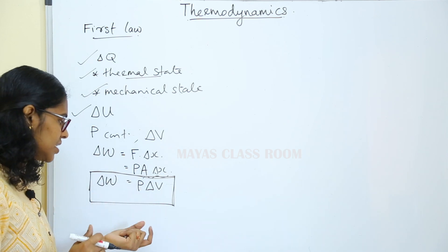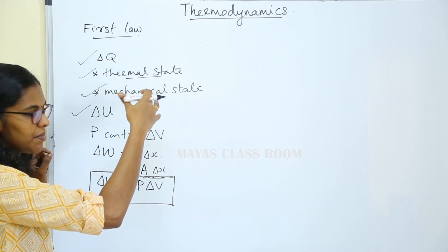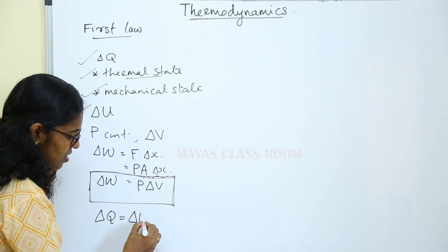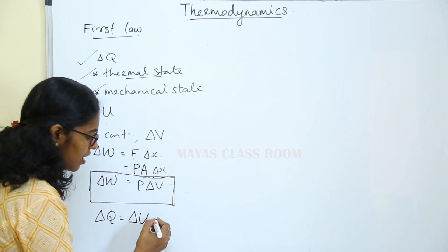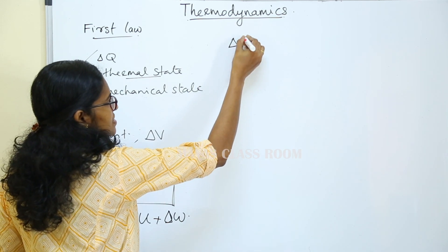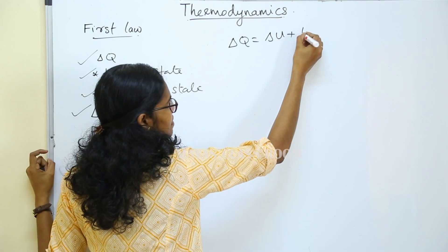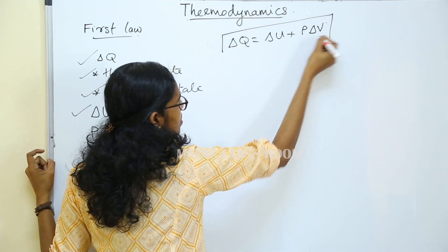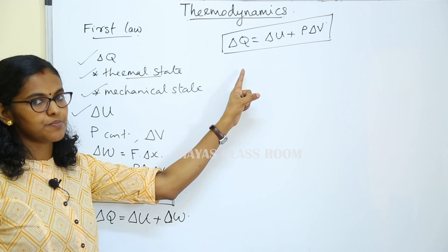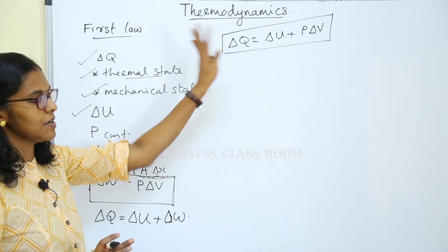If we look at the constant pressure, delta W is equal to P into delta V. What is delta U? Work is delta W. If we have the equation, delta Q is equal to delta U plus delta W. This is the first law of thermodynamics. The first law of thermodynamics equation is delta Q is equal to delta U plus P delta V.